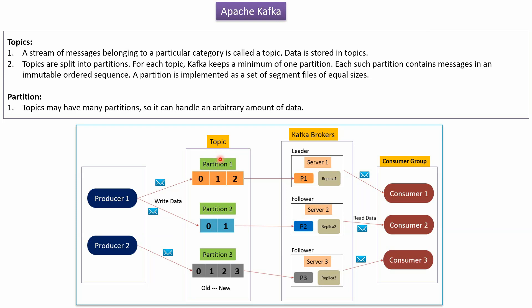Topics are split into partitions. Each topic will have a minimum of one partition. Each partition contains messages in an immutable ordered sequence. Partition is implemented as a set of segment files of equal sizes. A topic may have many partitions so that it can handle an arbitrary amount of data.